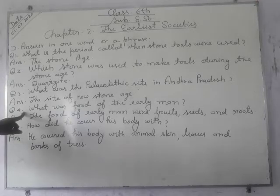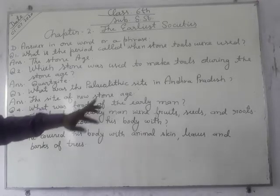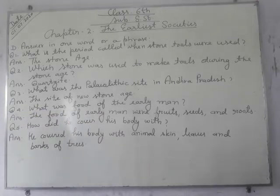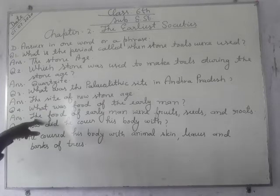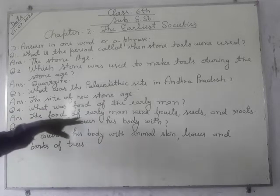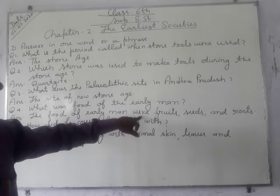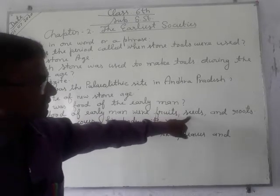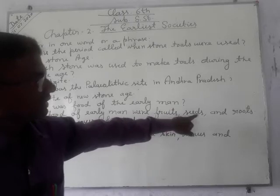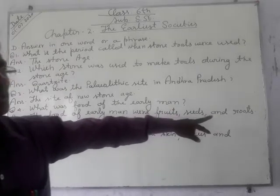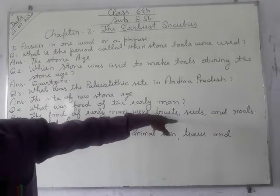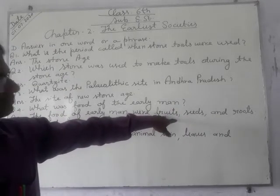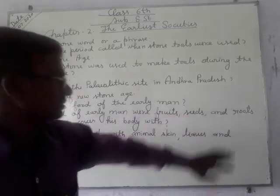Question four: what was the food of the early man? The food of the early man were fruits, seeds, and roots. Early man depended on these three things.